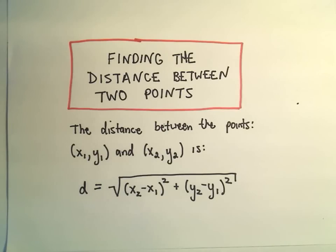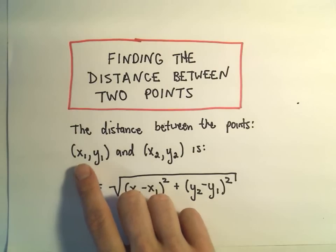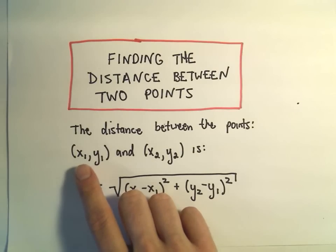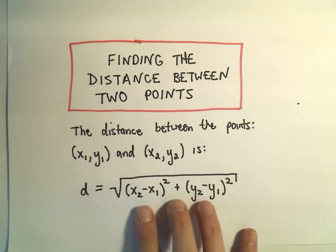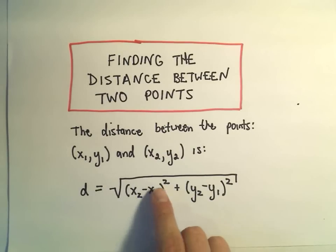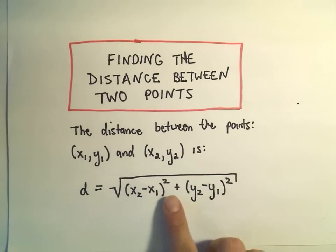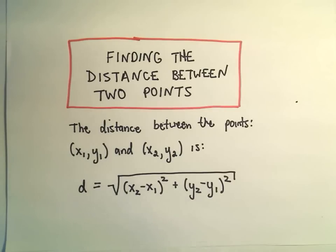Alright, in this video I want to do another example of finding the distance between two points. The distance formula, if you have the coordinates of the points, so if one point has coordinates x1, y1, the other point has coordinates x2, y2, the distance is: we subtract the x-coordinates and square it, subtract the y-coordinates and square it, add those values, and then take the square root.